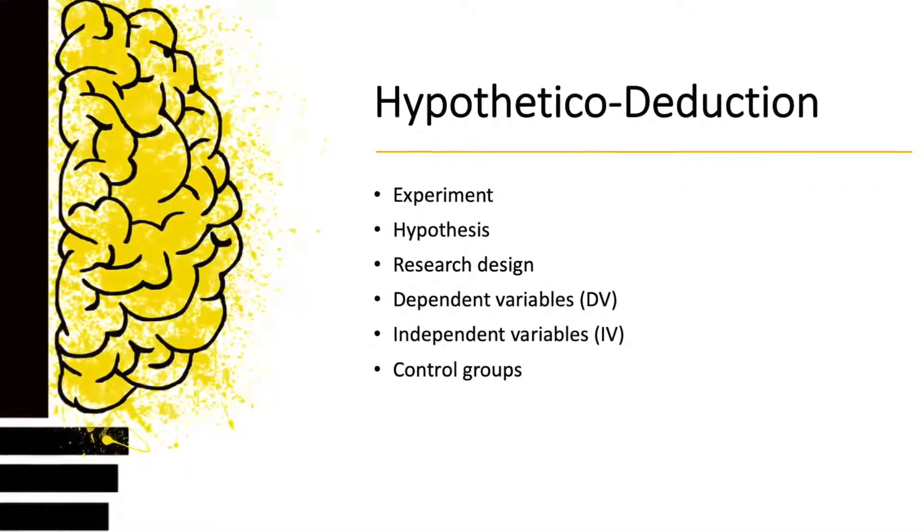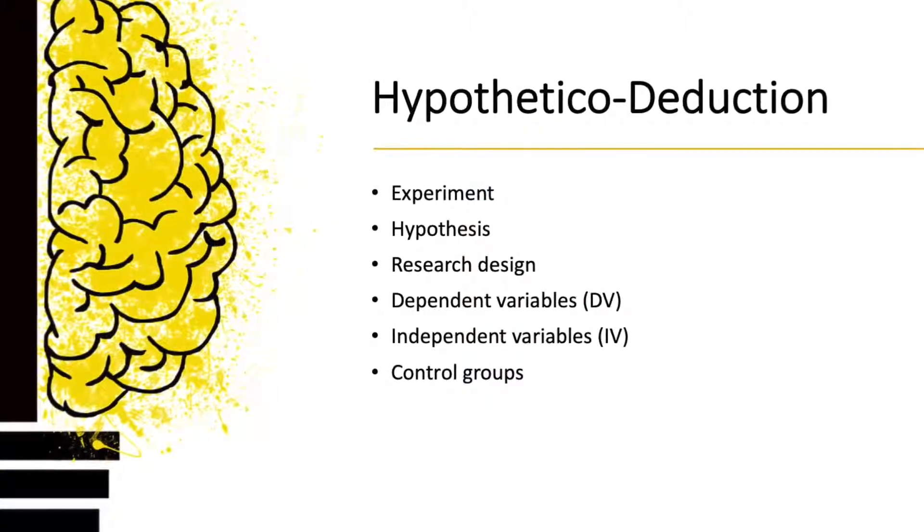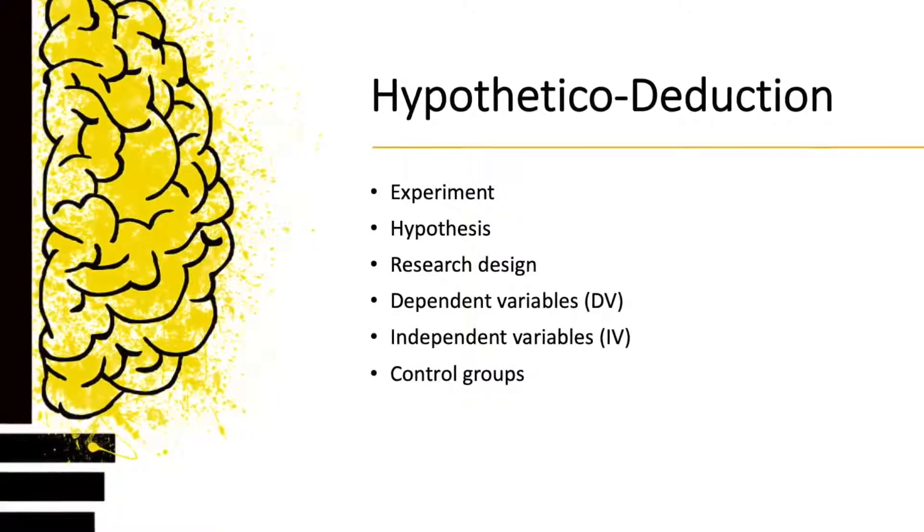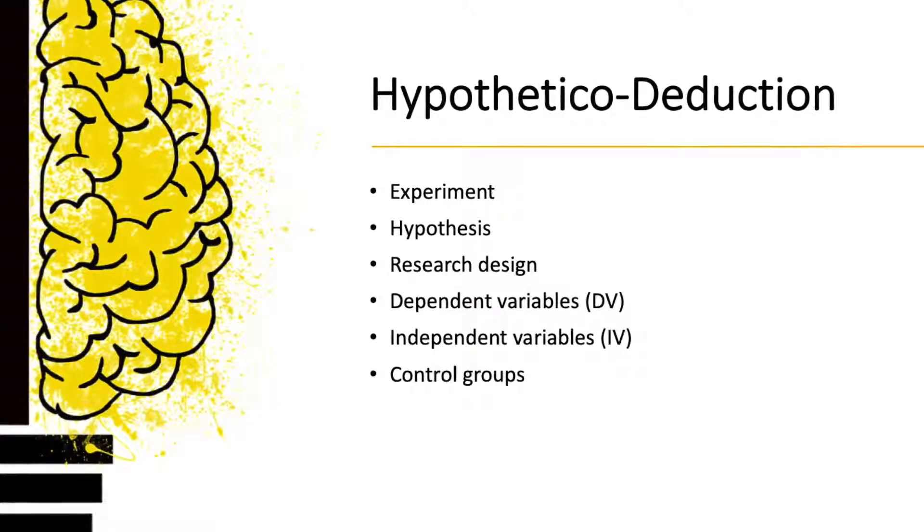The dependent variable or DV is what is being measured and IV or independent variable is what is being manipulated. There's a control group whereby it is not exposed to the manipulation.